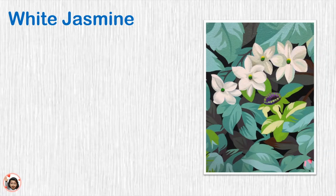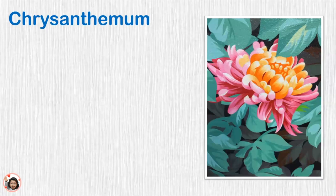The next flower is the white jasmine. The white jasmine is included because President Obama was born in the state of Hawaii, and he also lived in the country of Indonesia. The white jasmine grows in both places.